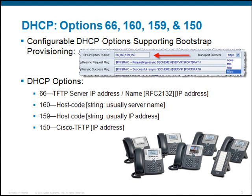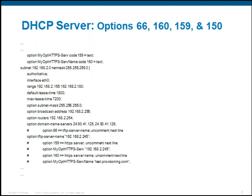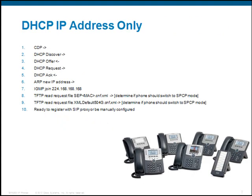The transport protocol of choice is HTTPS, which is the default. This is an example of a DHCP server's configuration file running on a Unix system. Near the bottom, you'll see I've listed several options, and all you need to do is uncomment the option in order to use it. For example, I'm using option 66 here, where it serves up the TFTP server name of 192.168.2.245.